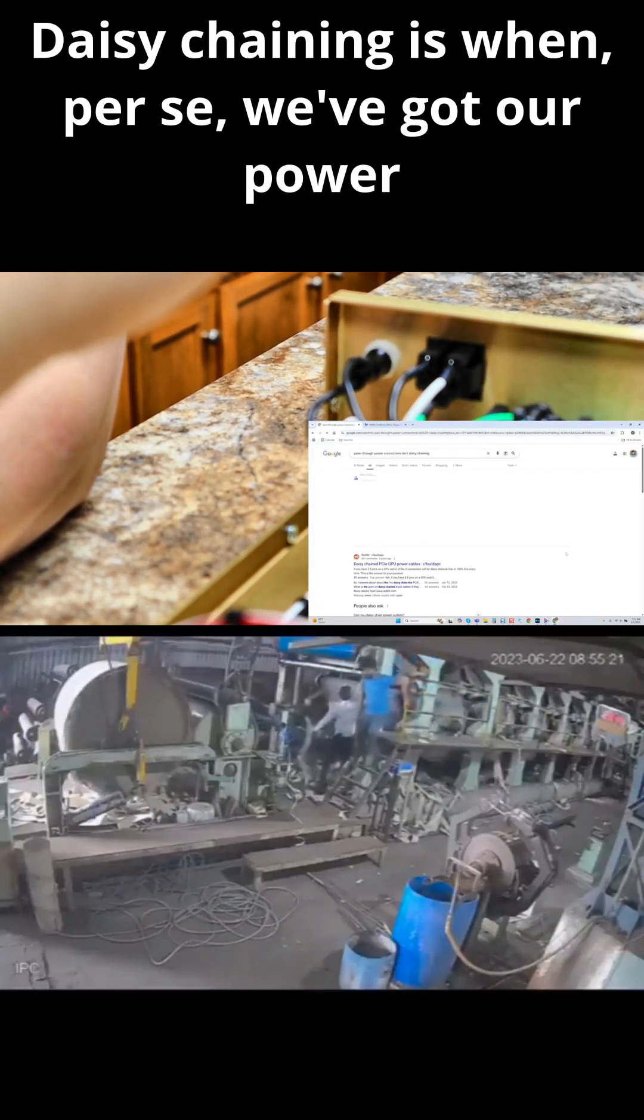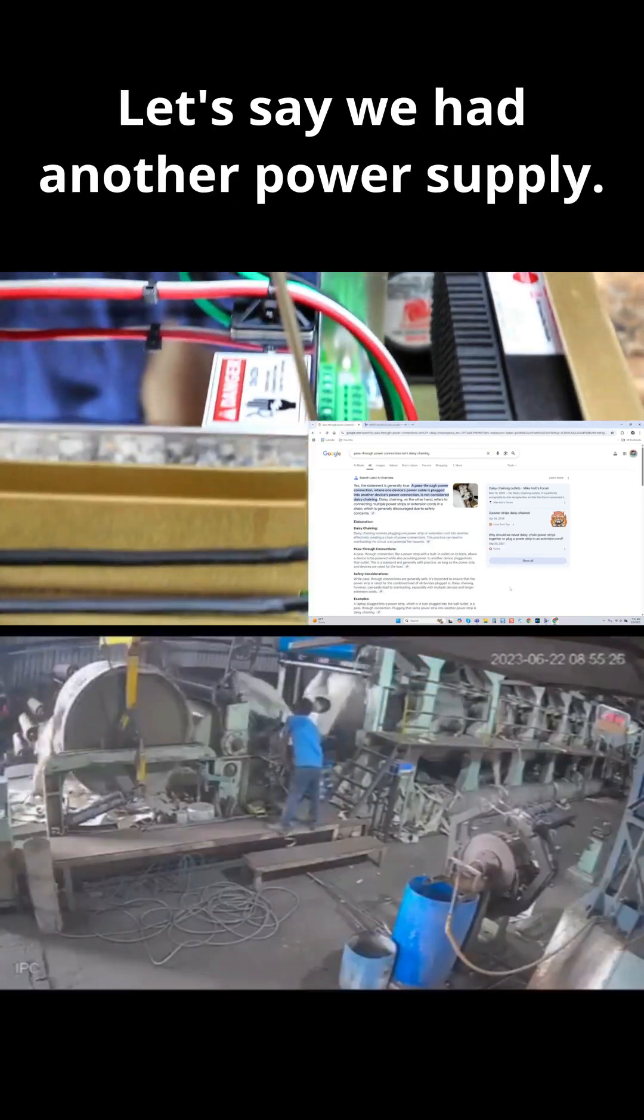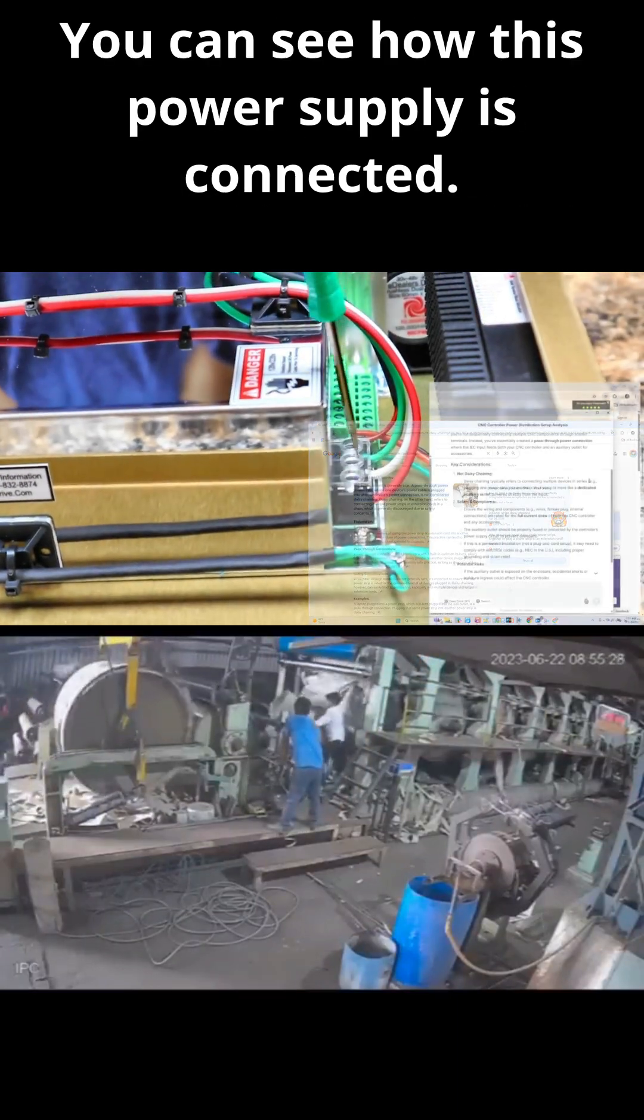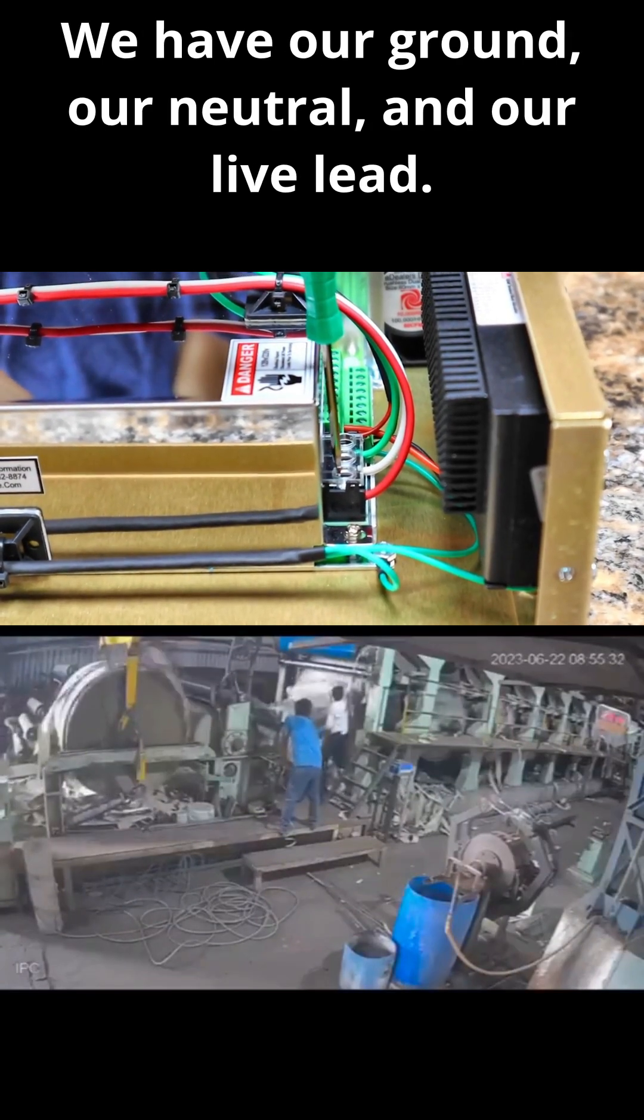Daisy chaining is when, per se, we've got our power supply here. Let's say we had another power supply. You can see how this power supply is connected. We have our ground, our neutral, and our live lead.